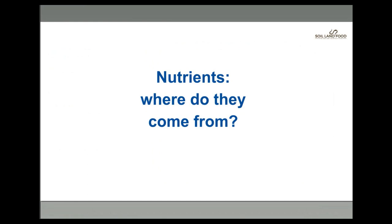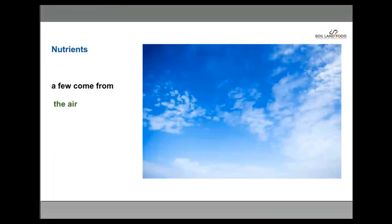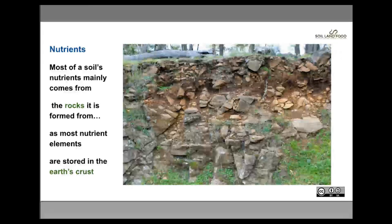Where do nutrients actually come from? Where does the whole thing start? For all of life on earth, the source of most nutrients is actually from the minerals in the earth's crust. Underneath the topsoil is the crust of the earth where the rocks are. Almost all the nutrients we deal with in agriculture come from those minerals in the rocks. A few cycle through the air — in particular nitrogen, whose main reservoir is actually the air we breathe, nearly 78% of it.